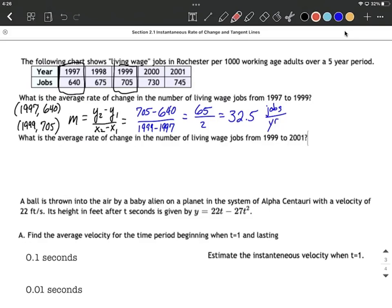We're going to do something very similar, but this time we're looking at 1999 and 2001. Again, treat them as ordered pairs: 1999 comma 705 and 2001 comma 745.